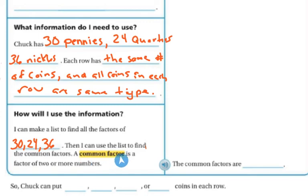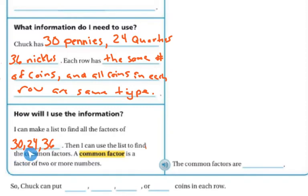A common factor is a factor that two or more numbers have in common. So if I list all the factors of 30, all the factors of 24, and all the factors of 36, then I can find the ones that they have in common.